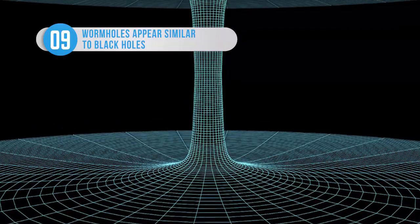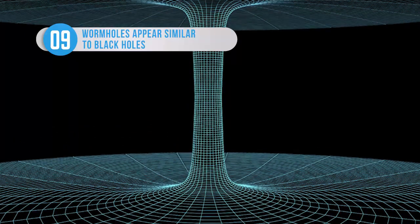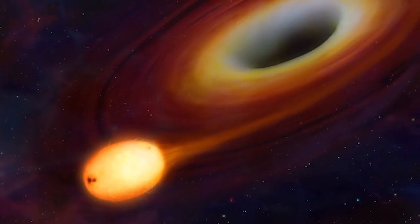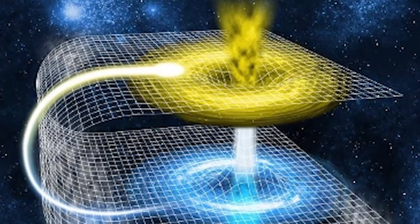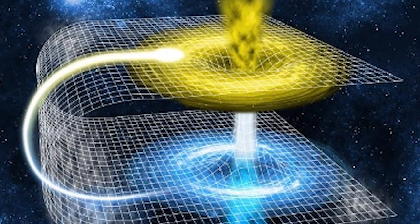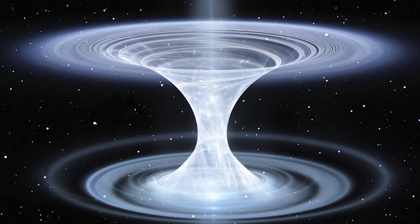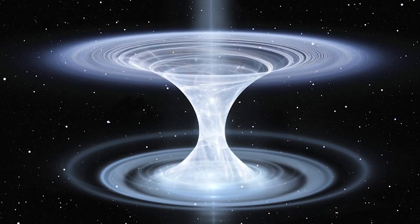A wormhole, also known as an Einstein-Rosen bridge, is a theoretical opening in space-time enabling a shortcut from one point in the universe to another. From the outside, wormholes may exhibit many of the characteristics usually associated with a black hole, meaning the two can be virtually impossible to tell apart.